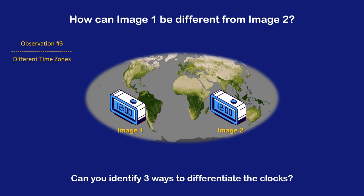However, in this example, both clocks are in the same location. In fact, they are only five inches apart. Same location, same time zone — how could they be different? One way is to divide the current time zone into smaller increments.